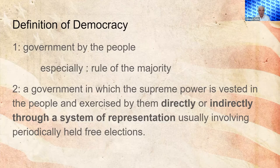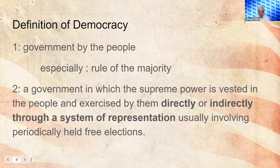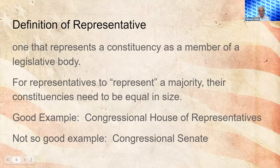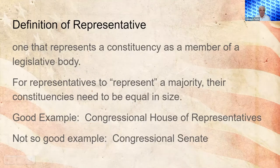In smaller groups you have direct democracy. In larger organizations such as the United States or in states, you need some form of representation, so you have a group of people who can meet and make decisions on your behalf. A representative is one that represents a constituency as a member in a legislative body. For representatives to represent a majority, the constituencies of each representative must be roughly equal in size. A good example is the Congressional House of Representatives — every 10 years we take a census and redraw congressional boundaries, making all districts roughly equal in size.